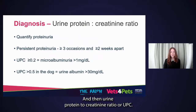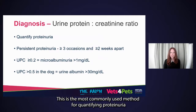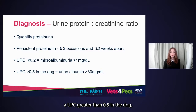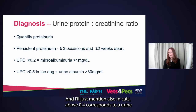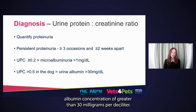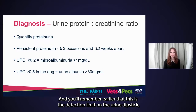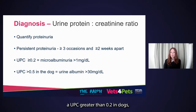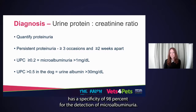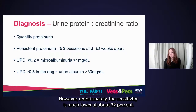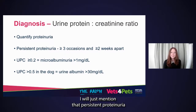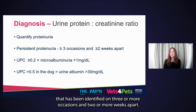The urine protein to creatinine ratio or UPC is the most commonly used method for quantifying proteinuria. A UPC greater than 0.5 in dogs (and above 0.4 in cats) corresponds to a urine albumin concentration of greater than 30 milligrams per deciliter — the detection limit on the urine dipstick. A UPC greater than 0.2 in dogs has a specificity of 98% for the detection of microalbuminuria; however, the sensitivity is much lower at approximately 32%. Persistent proteinuria is considered to be proteinuria identified on three or more occasions and two or more weeks apart, which is important to know prior to introducing any therapy.